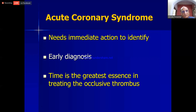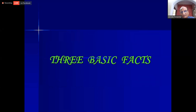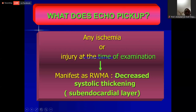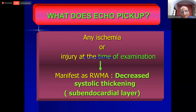In acute coronary syndrome, we need immediate action to identify because time is the greatest agent increasing the occlusive thrombus, and early diagnosis is extremely important. What does echo pick up? Echo picks up any ischemia or injury at the time of examination, manifested as a regional wall motion abnormality, mainly characterized by a decreased systolic thickening of the involved myocardial segment.